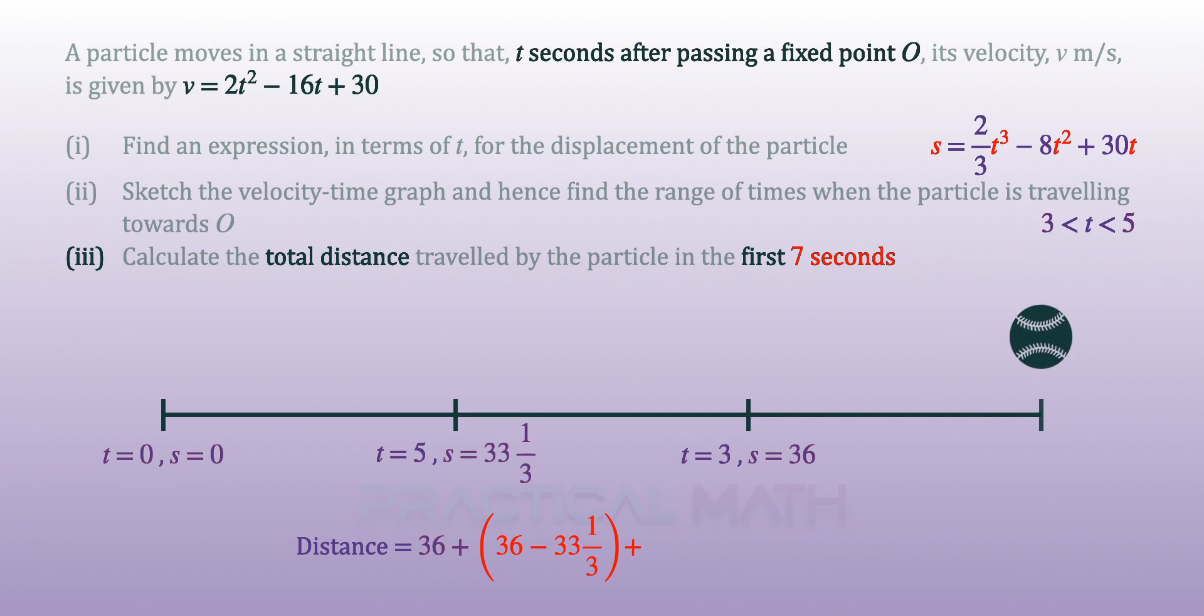Let's find out where the particle will be when t equals 7. The displacement is found to be 46 and 2/3 after the substitution into the s equation. Likewise, by taking the bigger displacement and subtracting away the smaller displacement, we will get the distance for the last part of the journey. And the distance is found to be 52 meters.